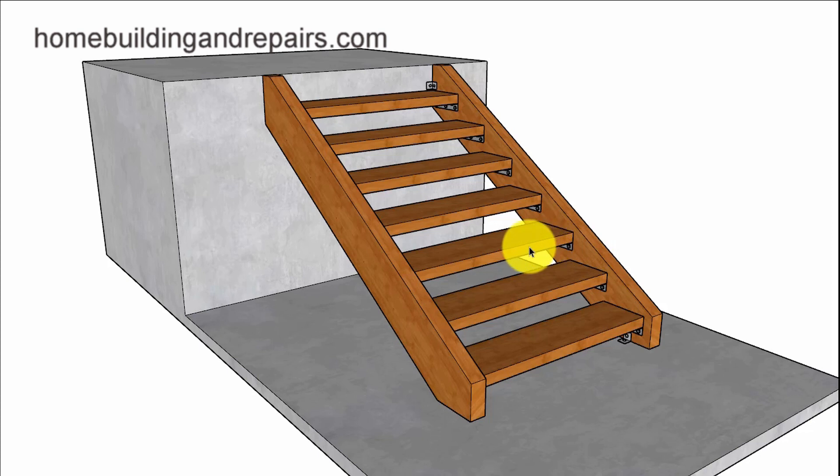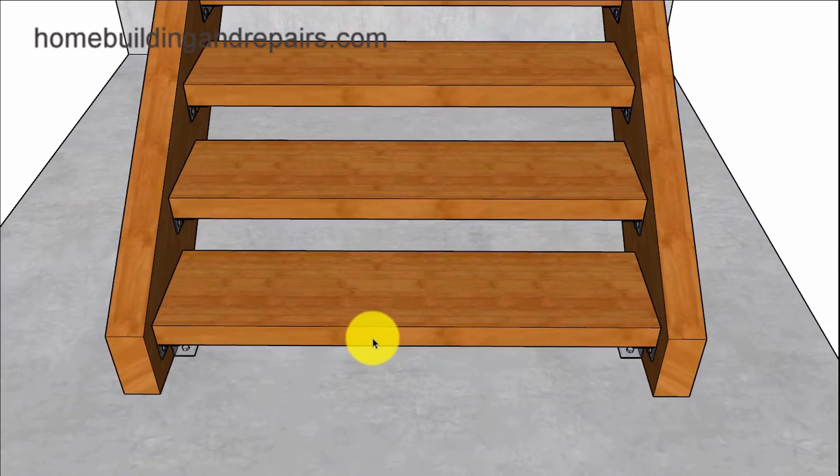The first thing you're going to want to think about is using larger treads. For example, you can forget about using a 2x12. I've used a lot of 3x12s before and even 4x12s. However, I have never used a 6x12, but that might be something to consider.